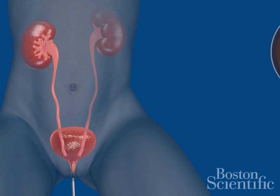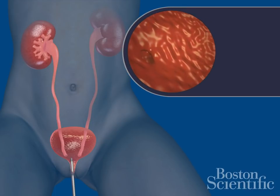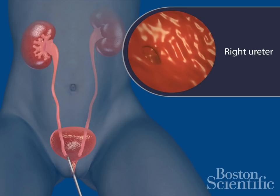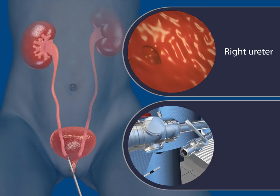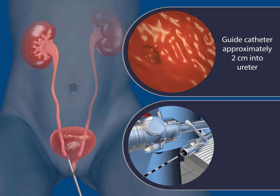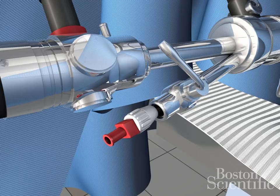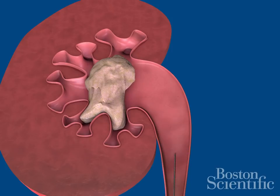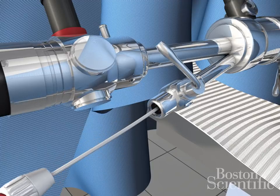Insert the cystoscope. Insert the catheter into the patient's ureter. Insert the guide wire through the catheter up to the kidney. Remove the catheter and cystoscope.